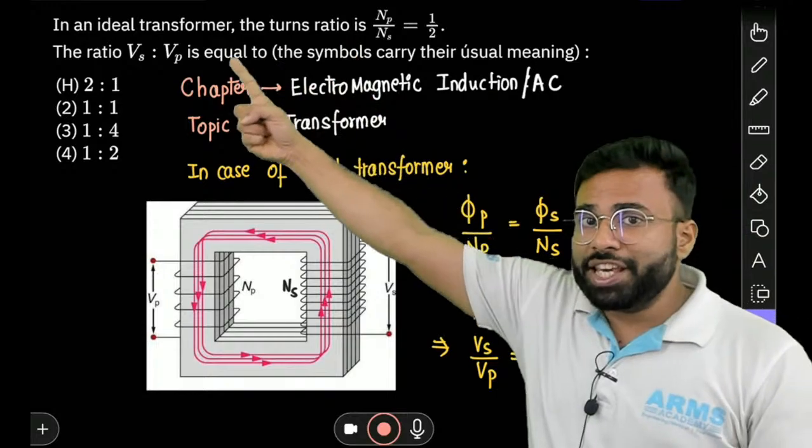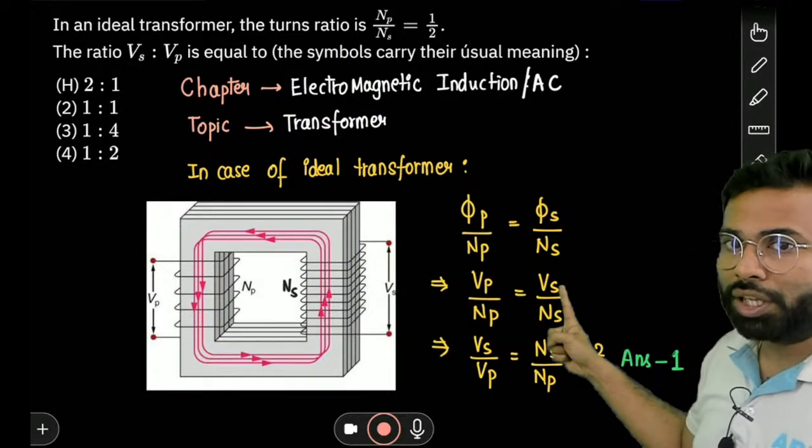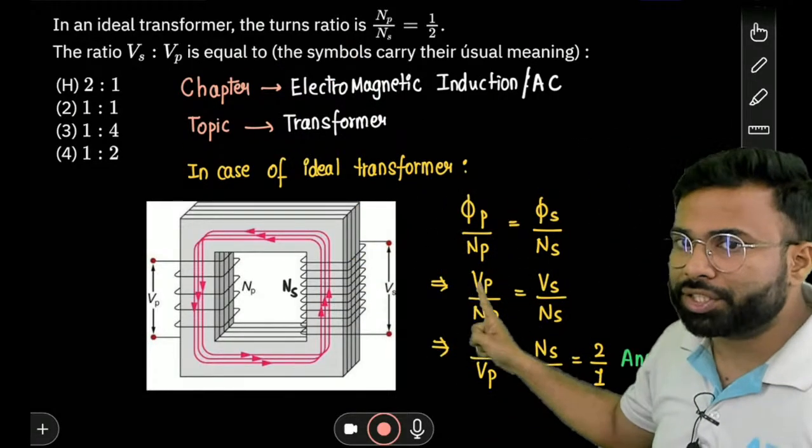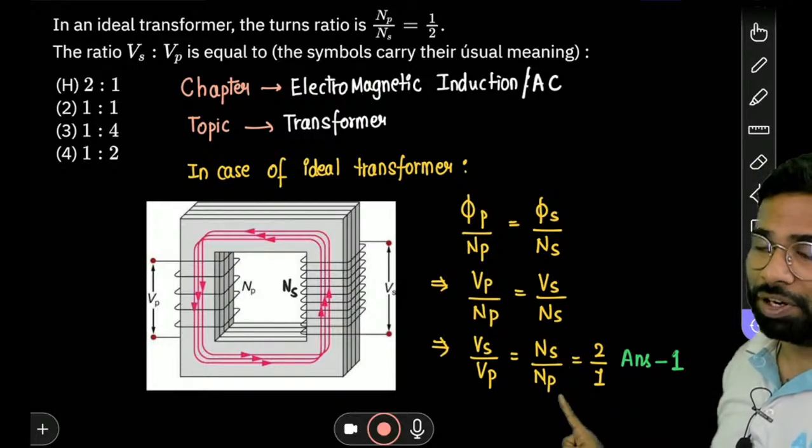And what do we need? We need Vs upon Vp. So we will put it here, we will put it down here. We will put it up here. So we will get Ns upon Np will be the answer.